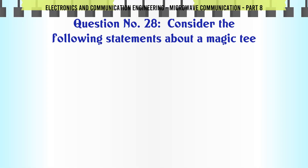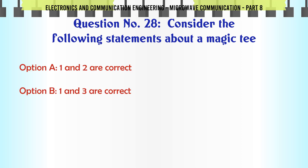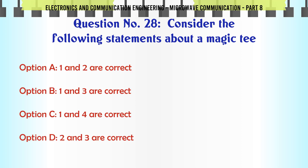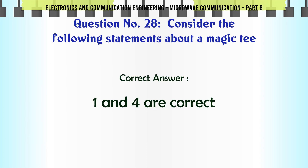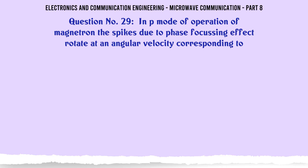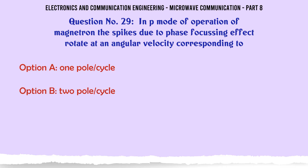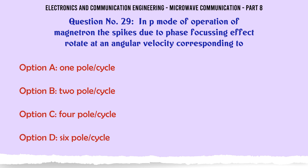Consider the following statements about a magic T — A. 1 and 2 are correct, B. 1 and 3 are correct, C. 1 and 4 are correct, D. 2 and 3 are correct. The correct answer is 1 and 4 are correct.